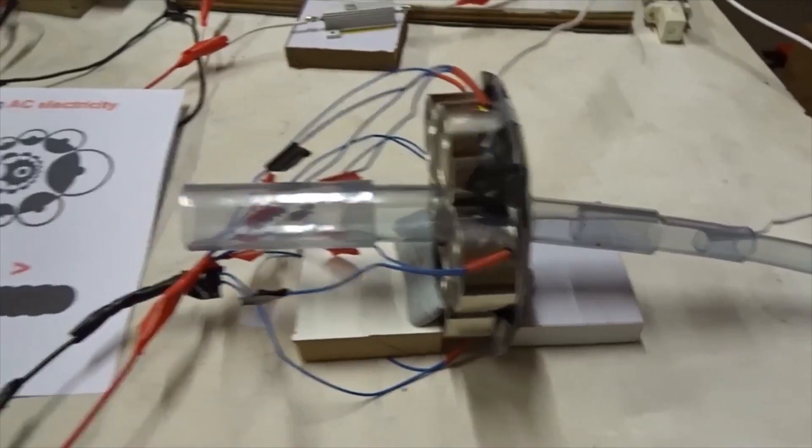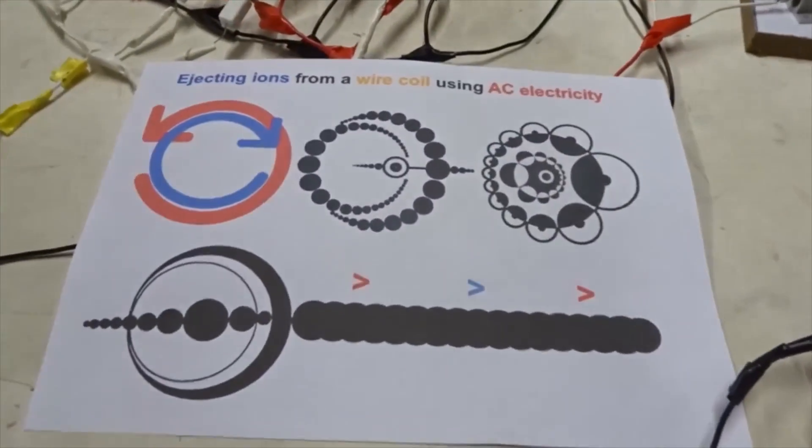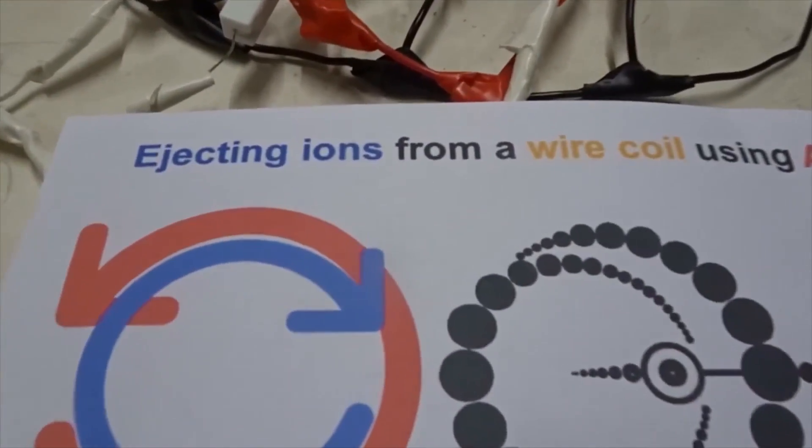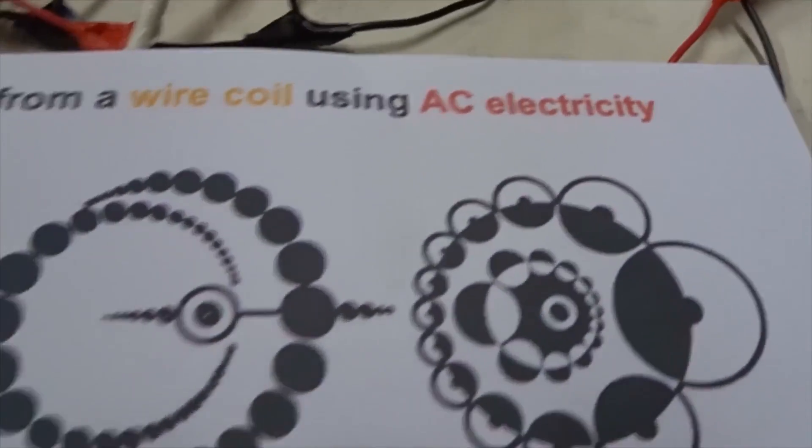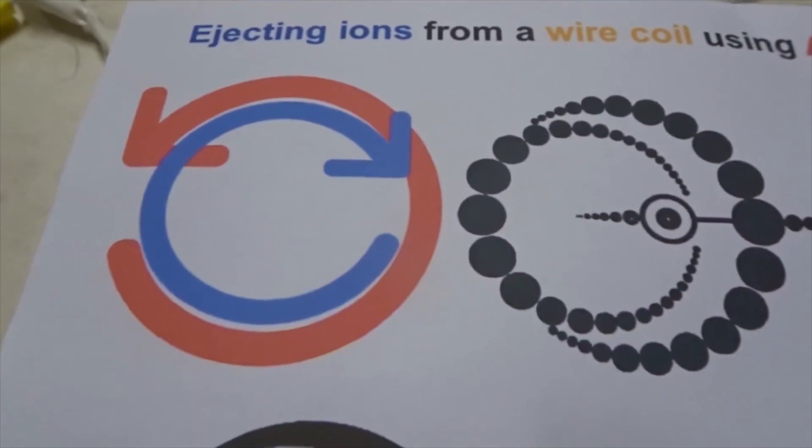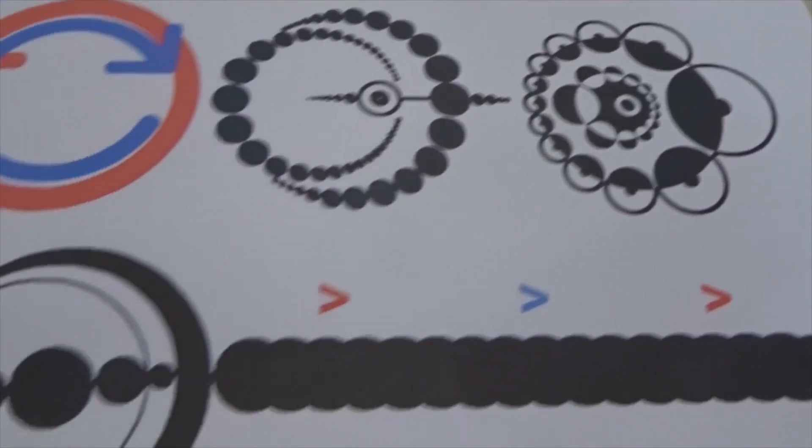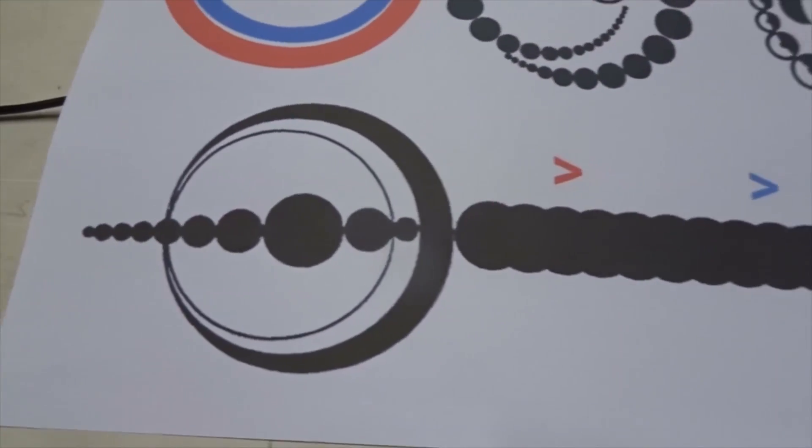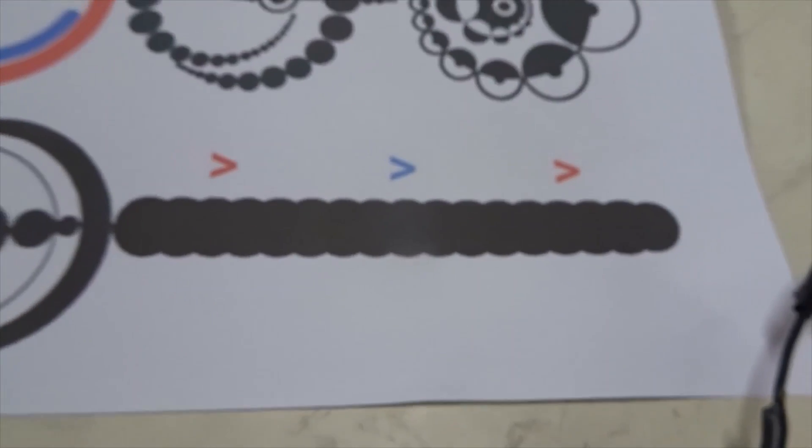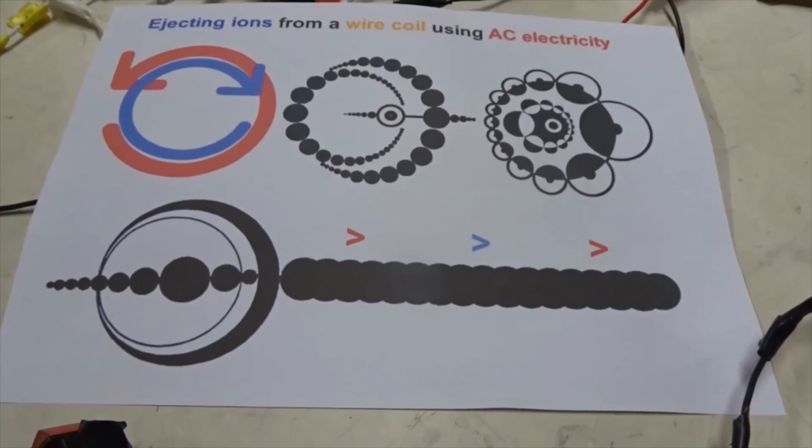It works basically according to this simple principle: ejecting ions from a wire coil using AC electricity. If we have AC electricity, as shown in these crop drawings, and we put argon gas to the middle, it can be ejected as thrust like in a rocket, but only at very high frequencies.